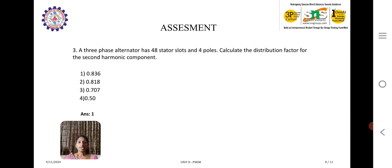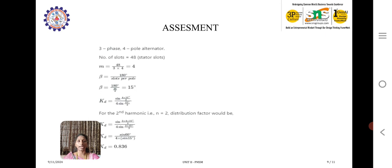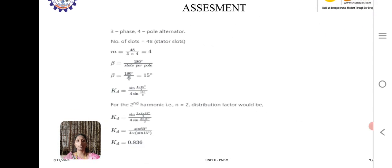Another question: a 3 phase alternator has 48 stator slots and 4 poles. Calculate the distribution factor. We already know how to calculate the distribution factor. The formula is sin M beta by 2 divided by M sin beta by 2, where M is number of poles and beta is 180 by slots per pole. By calculating this, the distribution factor value is 0.836.